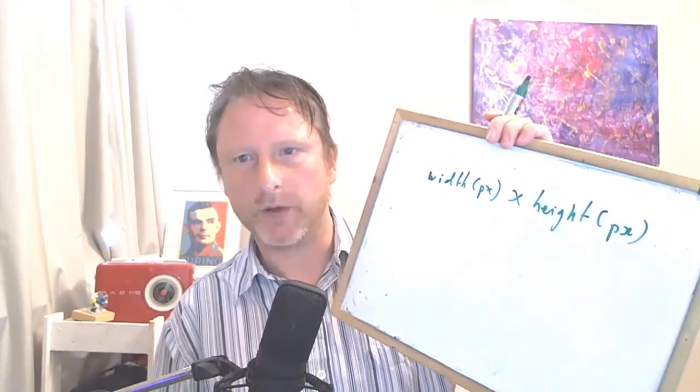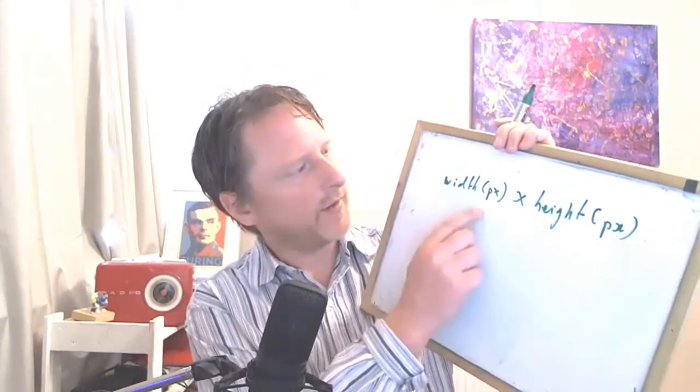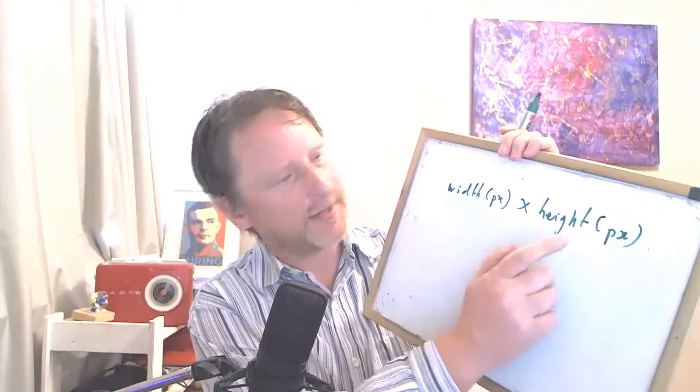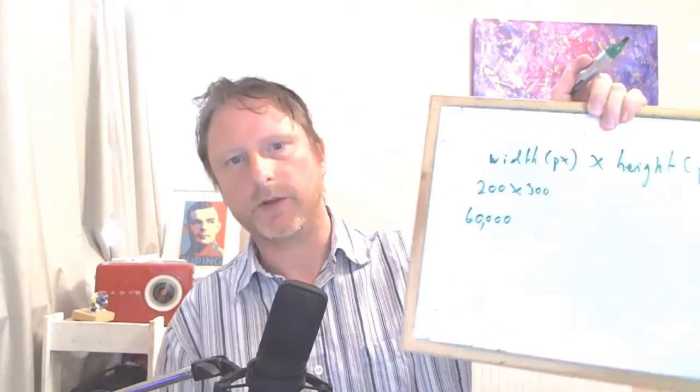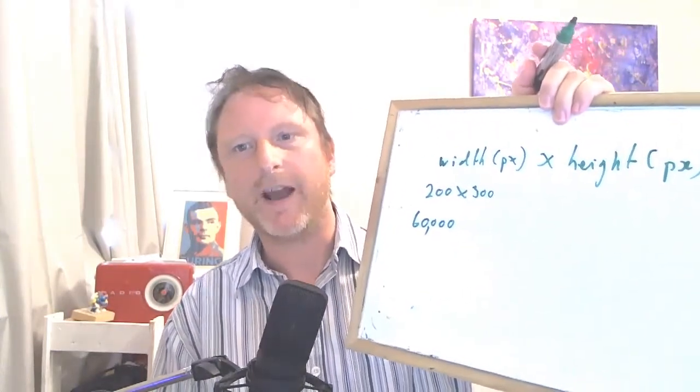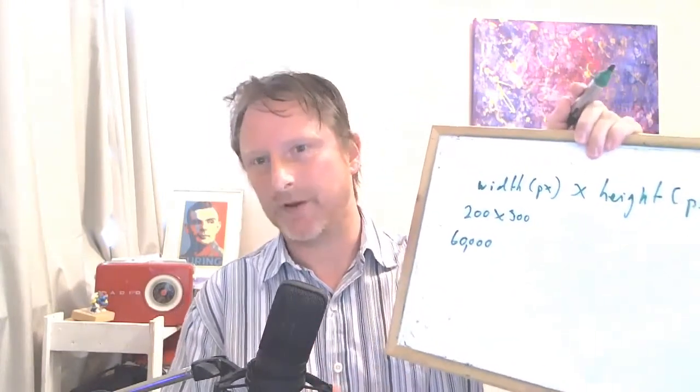Here's the formula in my almost illegible handwriting: width in pixels multiplied by height in pixels. If you do that calculation with simple numbers, say 200 by 300 — a portrait-shaped rectangle — that gives you 60,000 pixels. Now, what's the unit of measurement of those pixels? Well, it's pixels.